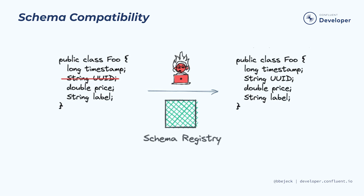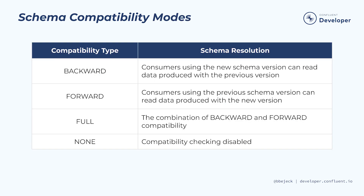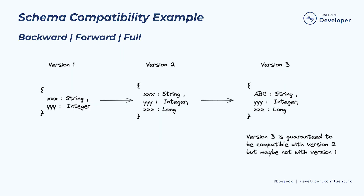Going back to our example, a simple check could have let us know ahead of time if the new version of the schema being used by the producer is compatible with the previous version being used by the consumer. The compatibility check wouldn't have passed due to the missing default value, so we would know to update the consumer to use the new schema prior to updating the producer. The three primary compatibility modes are backwards, forward, which is the default setting, and full. Note that it is also possible to set the compatibility mode to none, which results in no compatibility check being done when a new schema is registered. Regardless of which mode we decide to use, the associated check compares the schema being registered with its immediate predecessor.